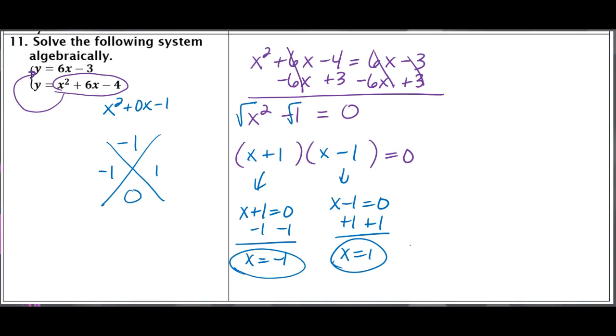So I have my x solutions. So what that means is that I'm going to have two ordered pairs as my final answer. One of them is going to have negative 1 as the x, and the other one will have positive 1. And then to figure out what the y values are, we have to take those and plug them each in.